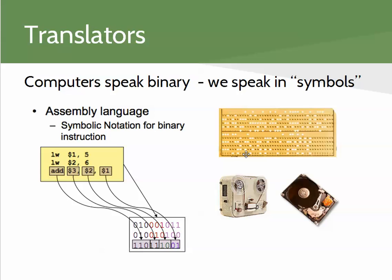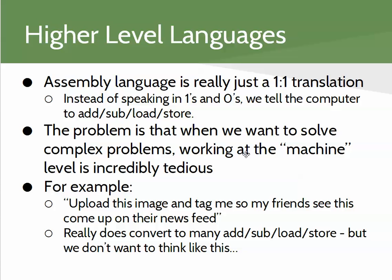In order to create programs that do what we see today, we simply can't write at this level of detail. We need to allow the language we use to communicate with the program to sort of repeat some of the details for us automatically. That's where we get higher-level programming languages. Higher-level languages are different from assembly language, because assembly is really just a one-to-one translation of tedious binary operations — add, subtract, load, store. We want to solve much more complicated problems, like upload this image and tag me so my friends can see me on their newsfeed. That converts into add, subtract, load, and store the same way as the last time you uploaded a picture. So we build higher-level languages that encapsulate some of the really small instructions.